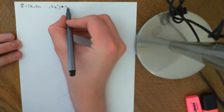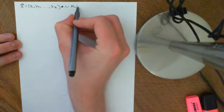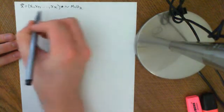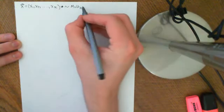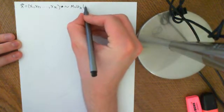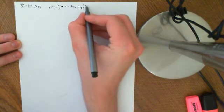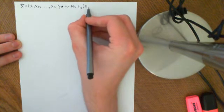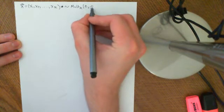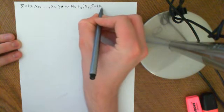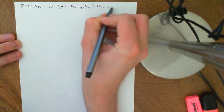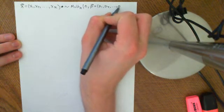This is multinomally distributed, and then we put a little k down there to remind ourselves that it's a vector of k components, n, and then that's just the number of tennis balls we're throwing into the baskets, and then with a probability vector p, which is p1, p2, all the way down to pk.